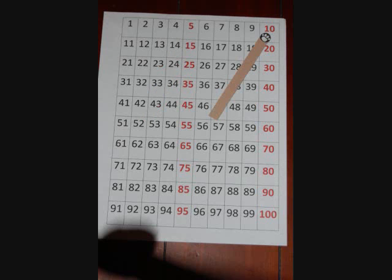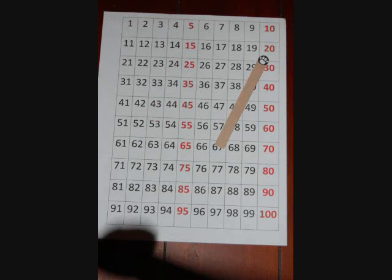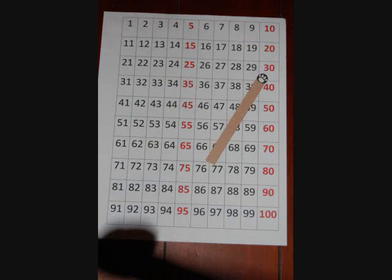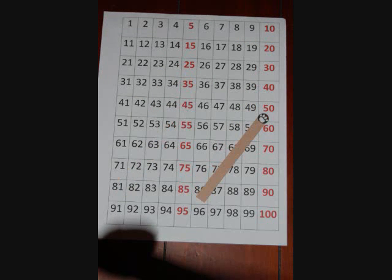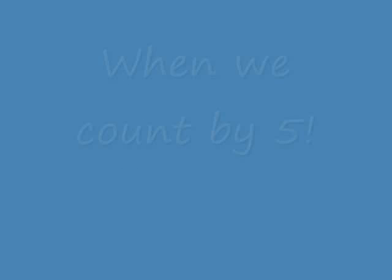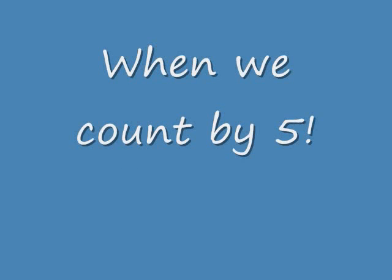Five, ten, fifteen, twenty, twenty-five, thirty, thirty-five, forty, forty-five, fifty, fifty-five, sixty — when we count by fives.